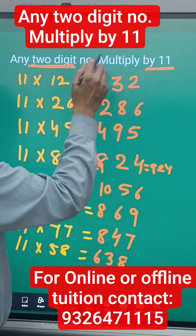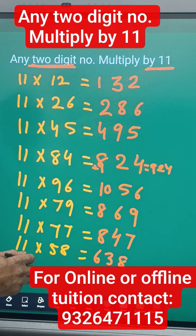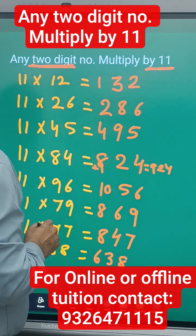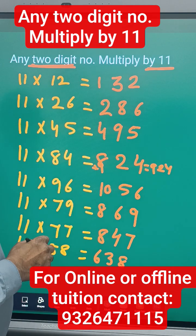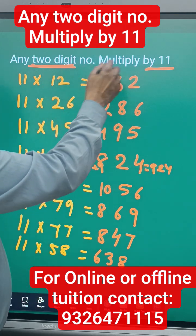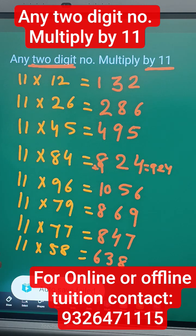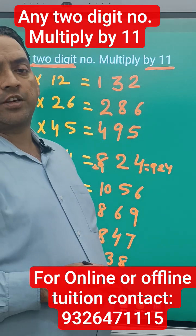So any two digit number, we'll get the answer just by writing both numbers and the addition of that right in between. For other digit multiplication, again you can see my videos. If you like, you can like and subscribe my channel. Thank you.